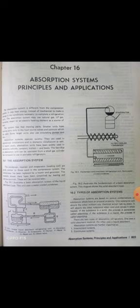In figure 16.1: A is the generator, B is the condenser, C is the receiver, D is the evaporator, E is the burner, F is water in, and G is water out.